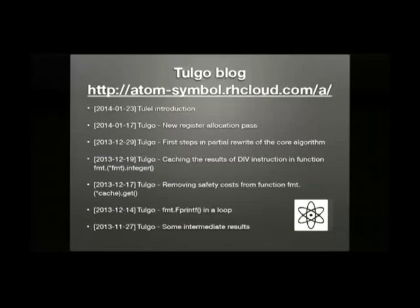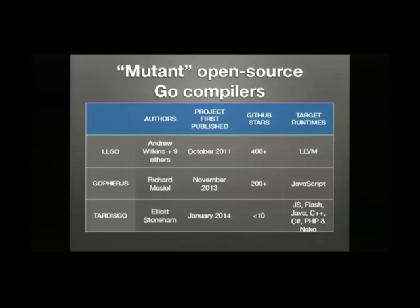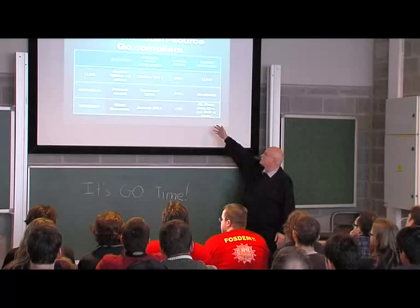Moving on to my main topic, the mutant Go compilers — there are three. LL Go targets the LLVM architecture, written largely by Andrew, who is in Australia at the moment. Go4JS targets JavaScript and it's written by Richard. And my own TARDIS Go, which targets seven different target environments. As you can see, they've been around for various lengths of time — mine for the shortest time, and LL Go for the longest, which is why it's got so many contributors.